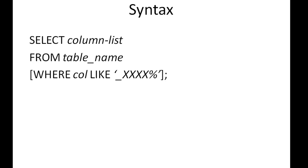The syntax of the LIKE operator is pretty simple: you have your SELECT keyword, then the column list, then the FROM keyword and the table name, and then an optional WHERE clause through which you make the comparison using the LIKE operator. Even if you're making comparisons between numeric values, you have to place your values within single quotes. This is different from the equality operator, where we do not put numeric values in single quotes.